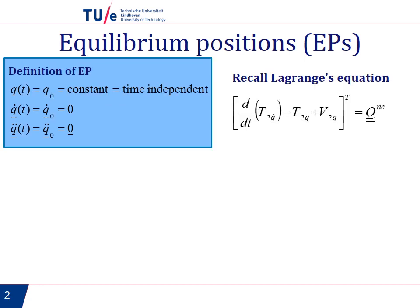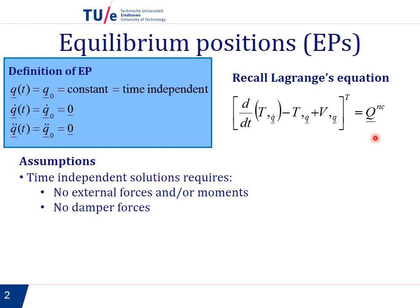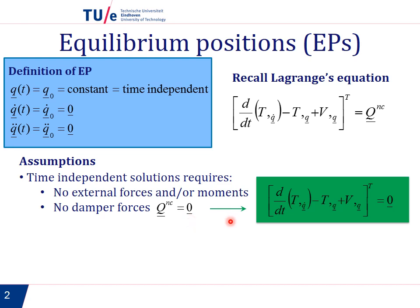Let us go back to the Lagrange equation — you see it here on the right-hand side of the screen — and we will need to make some assumptions. The first one is that since we have time-independent solutions, this means that there are no external forces or moments, because forces and moments are time-dependent, and there are no damper forces, because damper forces depend on q̇. So the conclusion is that the non-conservative generalized forces are 0, and therefore our new Lagrange equation has 0 on the right-hand side.